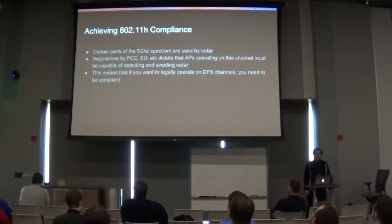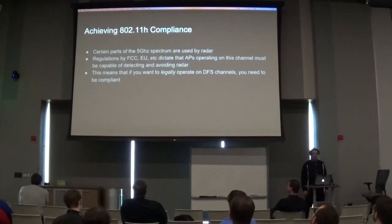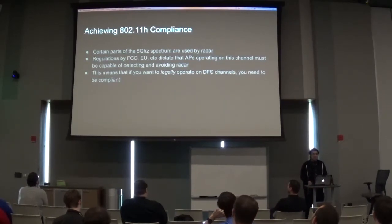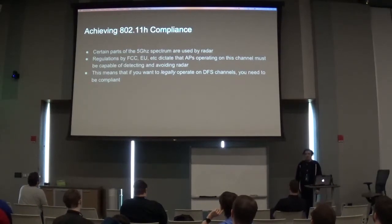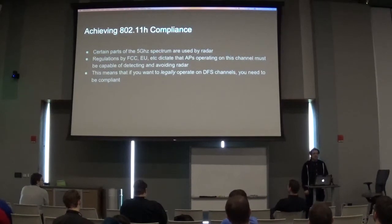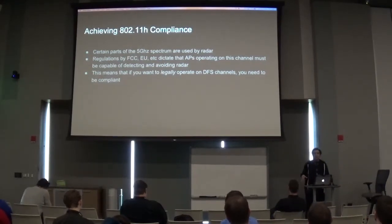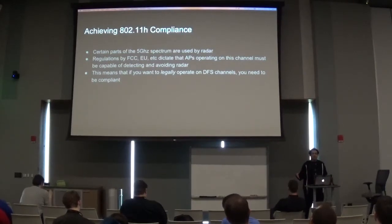Certain parts of the 5 gigahertz spectrum are used by airplane radar, weather radar, and other things we don't want to mess with. Because of this, there are regulations enforced by the FCC and EU organizations. They state that if you're running an access point on any channels that overlap with airplane radar, your access point has to be capable of detecting and avoiding radar. Your home router — if it uses these channels, which it probably does — is actually a radar detector. Periodically it listens for the presence of airplane radar, and if it detects radar, it has to shut down, wait 30 seconds, then start looking for a new channel without radar. If it detects radar on that channel too, it has to repeat. You can actually see a denial-of-service attack where you just simulate airplane radar near one of these access points on all channels and it becomes unable to run.